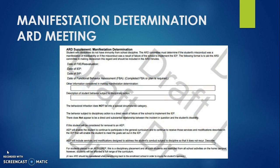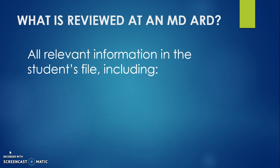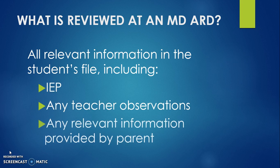Once a student reaches the 11th day of removal in the school year, or a disciplinary infraction has occurred that may result in a change of placement, a Manifestation Determination ARD meeting must be held. The Manifestation Determination form in the IEP must be completed thoroughly and discussion noted clearly in the ARD Summary. The relevant information to review includes the IEP, any teacher observations, and any relevant information provided by the parent. Other relevant information in the student's file may include the evaluation data, discipline history, and details of the event.